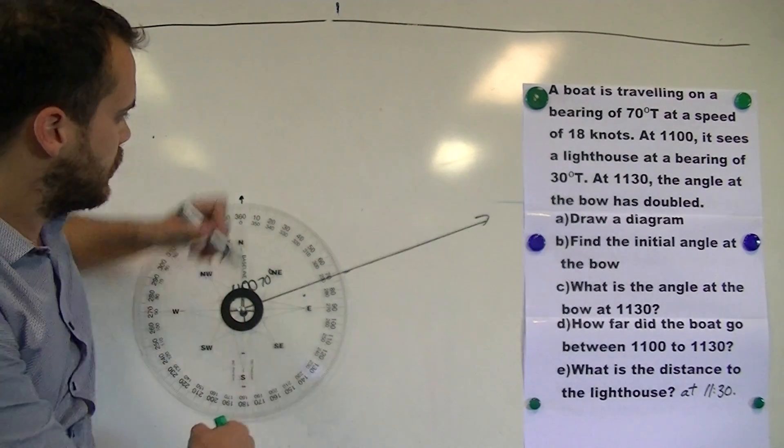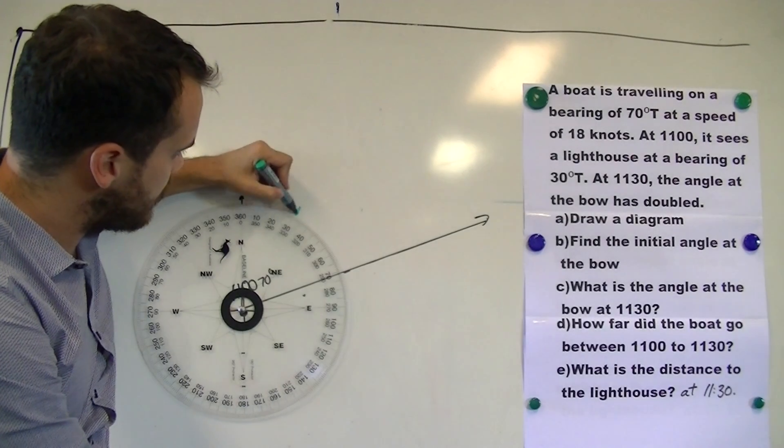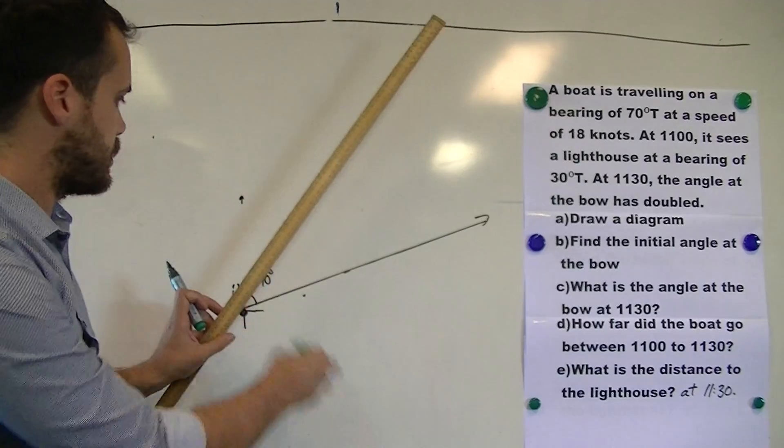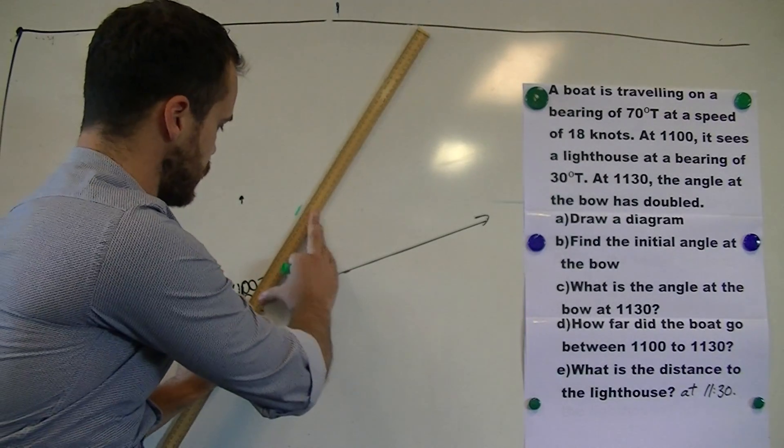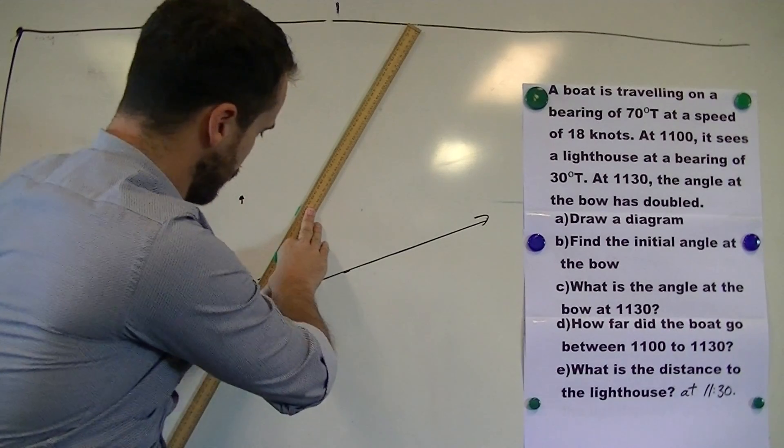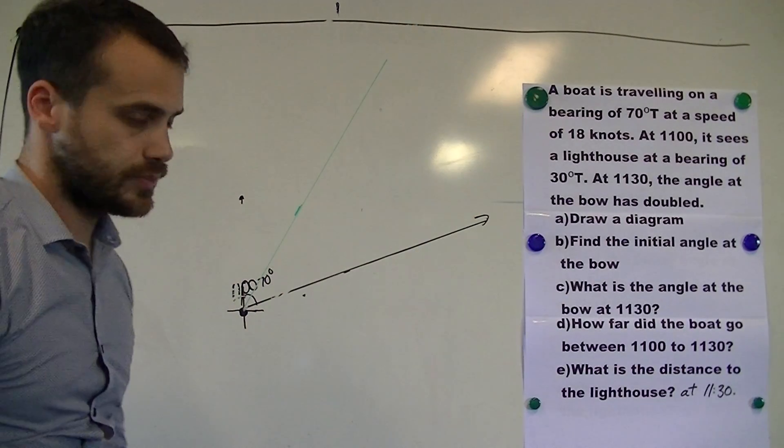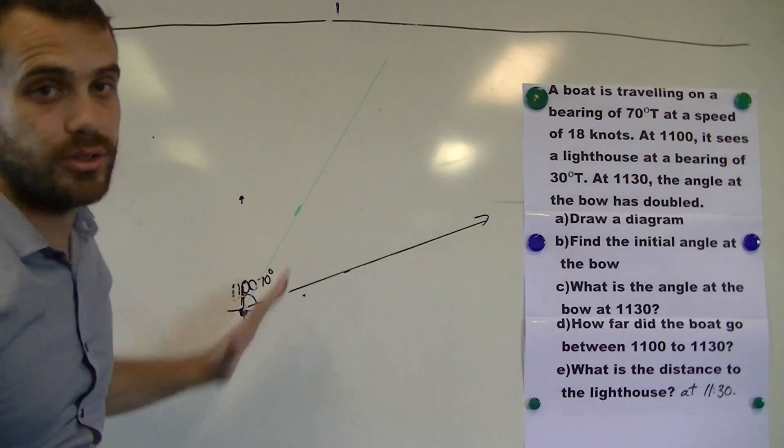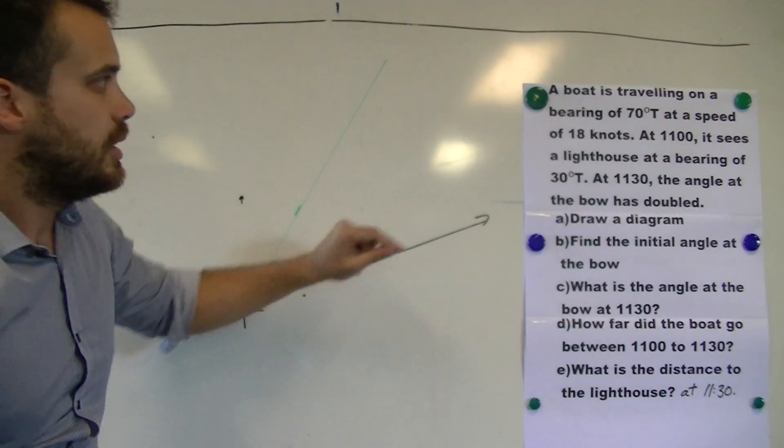Now that means that our lighthouse, which I'm going to make green, our lighthouse is up here somewhere. Somewhere along this green line is our lighthouse. Now I don't know where our lighthouse is yet, but it's on a bearing along that green line. Let's continue.